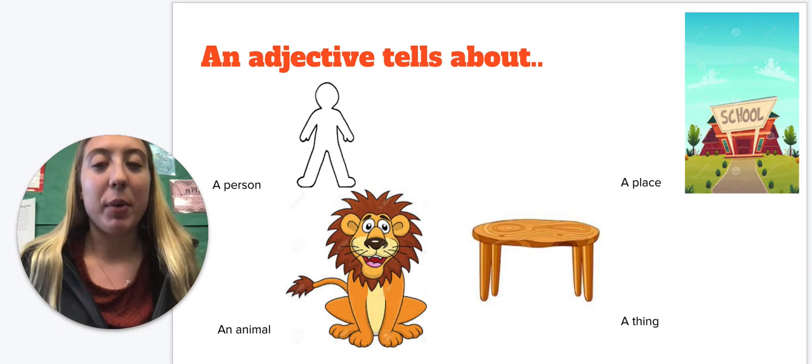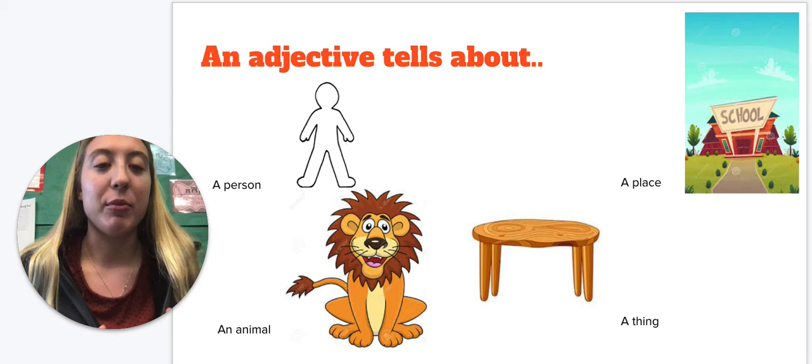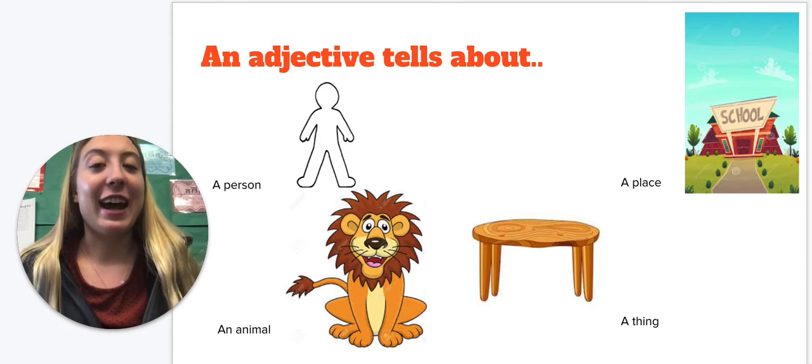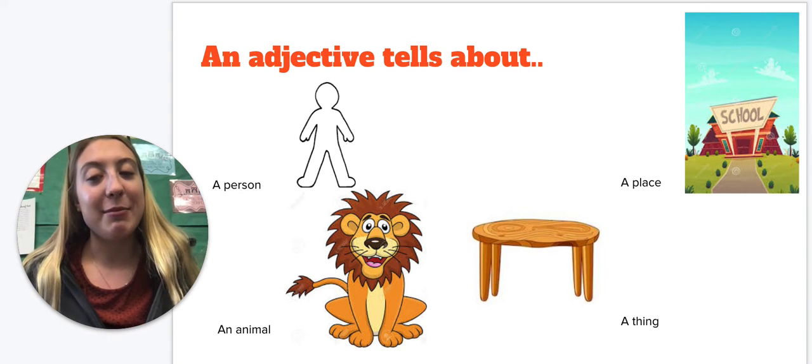Now I want you to think, what part of speech is a person, animal, place, or thing? A noun. So an adjective is going to describe a noun.